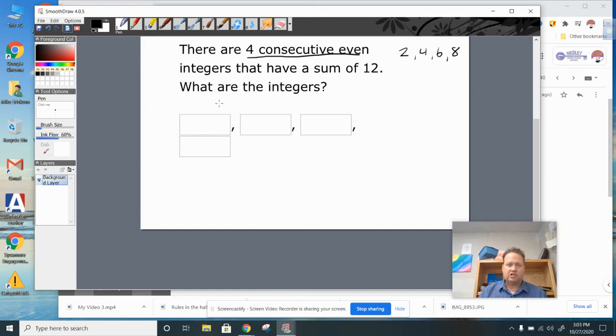The first integer in any set that you don't know will always be x. The question is, how do you name the others? If they're even, they're always two apart. The same as with odd, they're always two apart. So this next one is x plus 2.